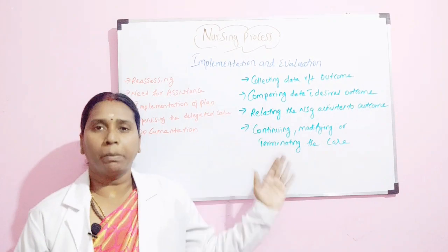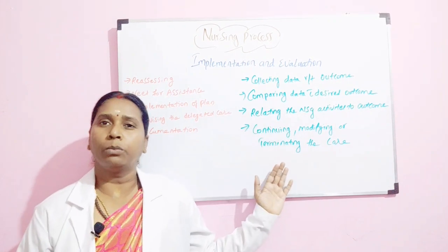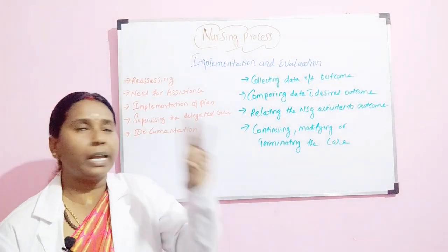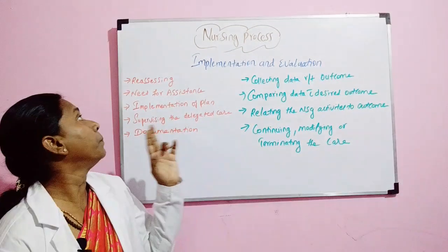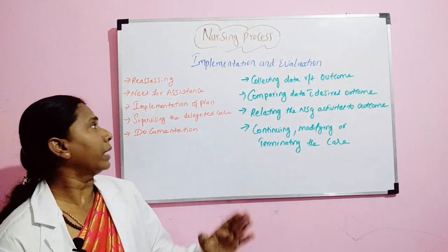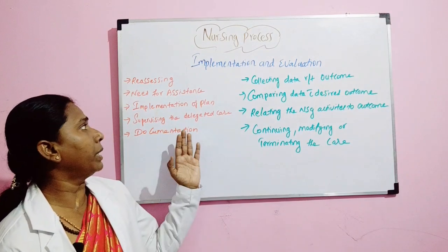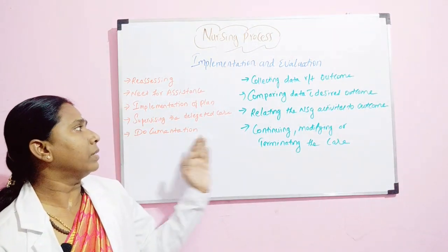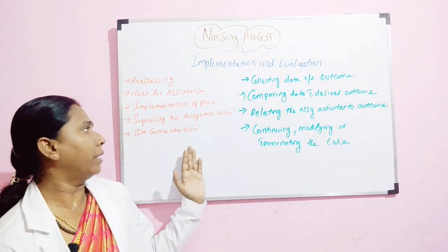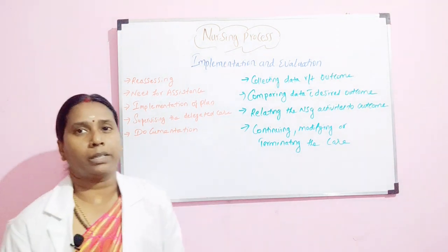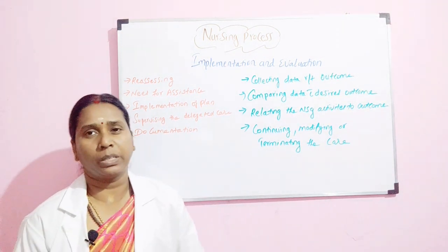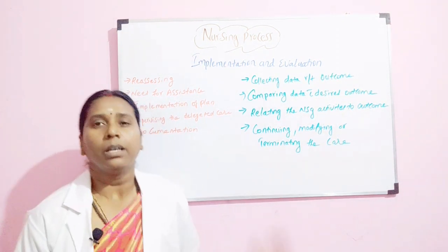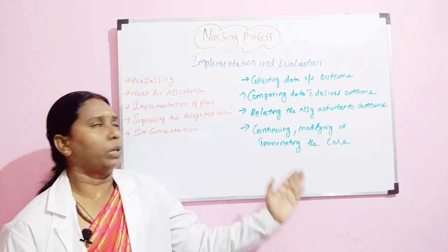In the implementation part, always remember these five areas: reassessment, need for assistance, implementation of the plan, supervising the delegated care, and documentation. With this, we complete the implementation phase. Now, evaluation.